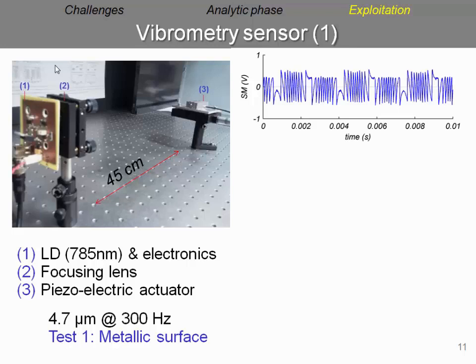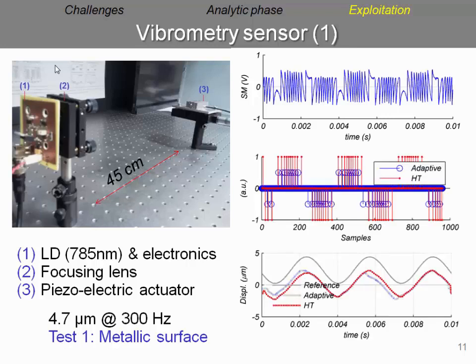For our first test, we acquired three periods of the sinusoidal movement of the target. We applied our algorithm HT for Hilbert transform. We compared against a previously reported algorithm based on adaptive threshold, which follows the different variations of the fringes. We observed that in both cases, we have proper reconstruction according to the reference movement of the target.